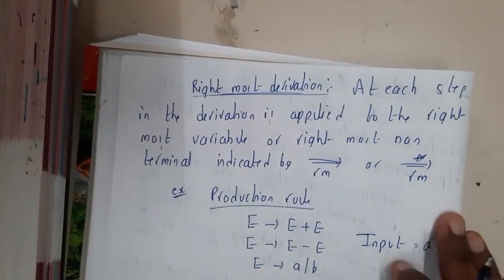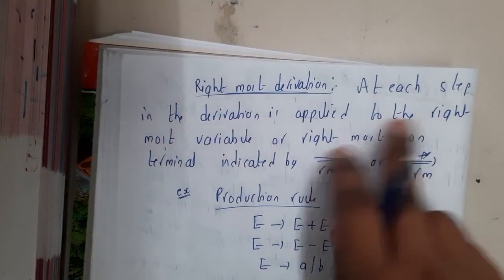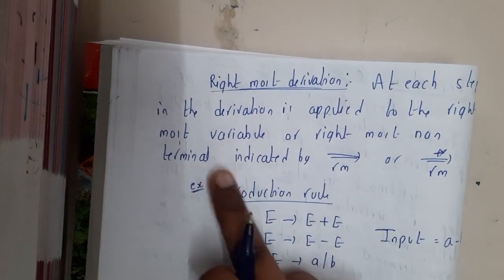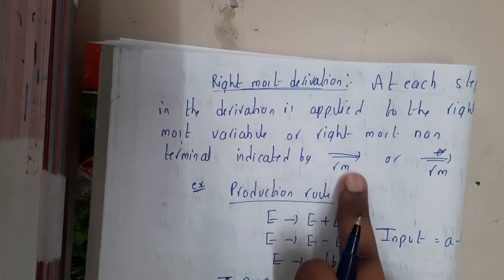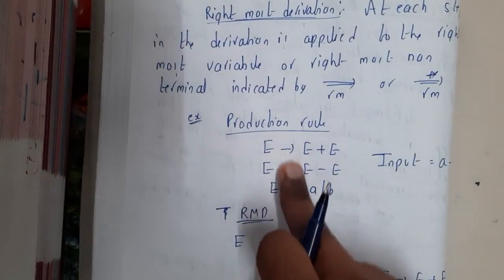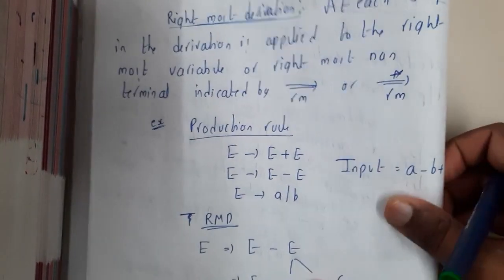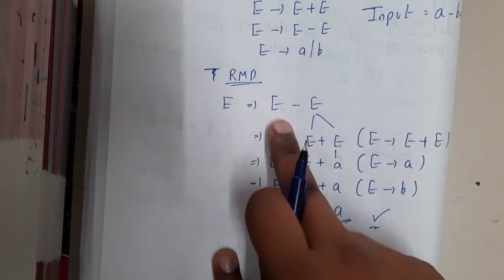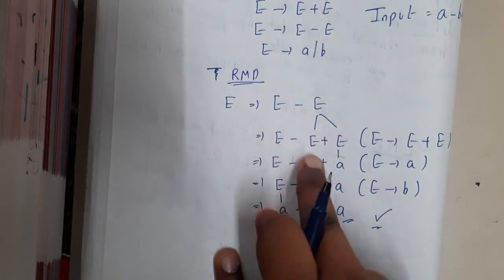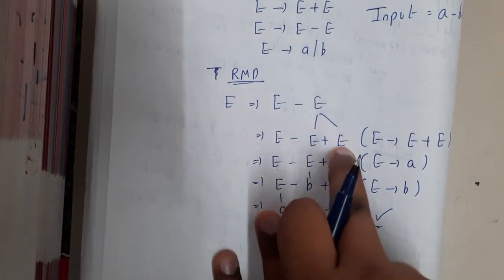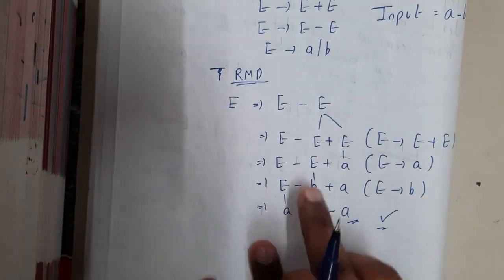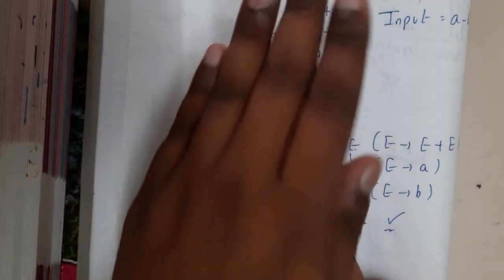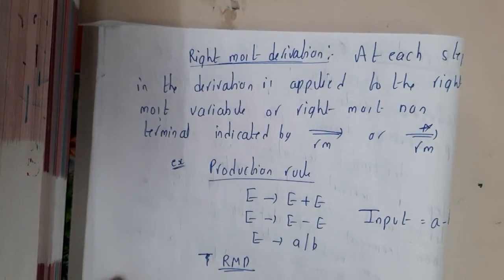Similarly, rightmost derivation — from the name you can say we should be expanding from the right side. At each step in the derivation it is applied to the rightmost variable or rightmost non-terminal. It is indicated with 'implies RM' or 'implies RM star'. Taking the same production rules and same input: E goes to E minus E, then expand the right E to E plus E, and then from the right, this E becomes A, this E becomes B, and this E becomes A — and we reach the string. That is rightmost derivation.